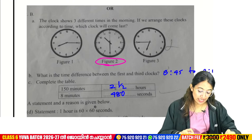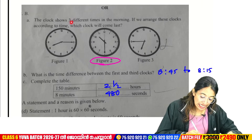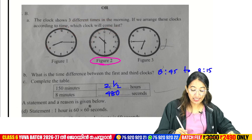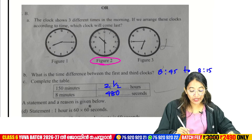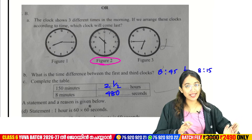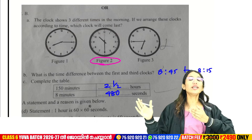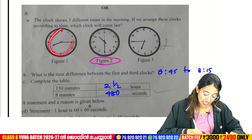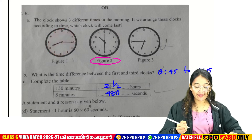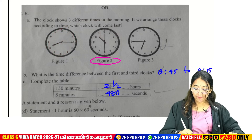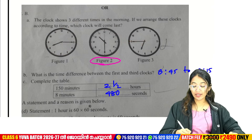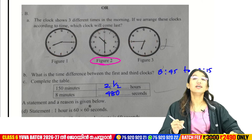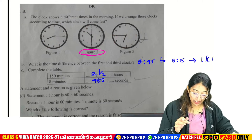Here is a clock. Three clocks are here. The clocks show three different times in the morning. Ravila is here at three times. If we arrange these clocks according to time, which clock will come last? We have to make sure of the order. The pins are at 8th, 10th, then 3rd.